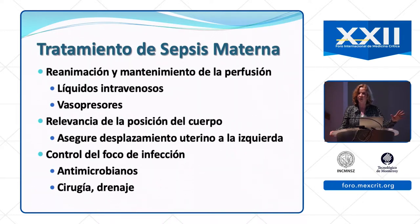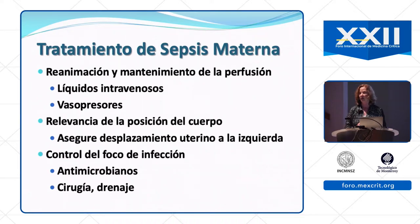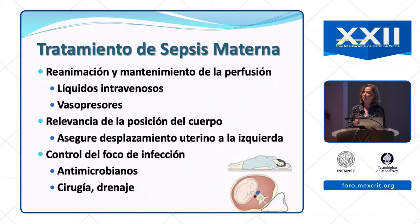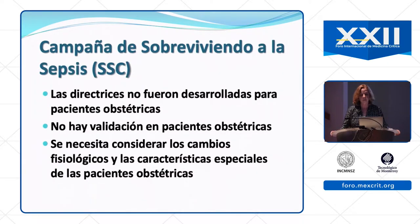If we've identified our patient, treatment is similar to other patients: resuscitation, maintaining perfusion with intravenous fluids and vasopressors, plus controlling the source of infection with antibiotics and sometimes surgical intervention. A unique consideration in pregnancy is that you must displace the uterus from the inferior vena cava — you should not call a patient hypotensive until you've relieved that potential obstruction. The patient must be in the left lateral decubitus position.